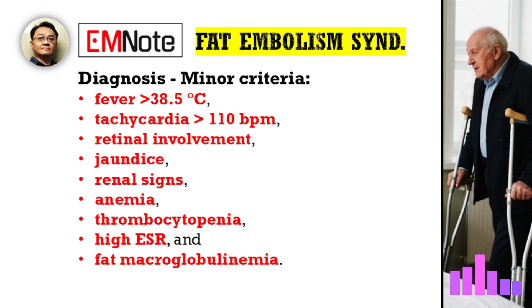The minor criteria add supporting evidence. They include fever usually greater than 38.5°C, tachycardia with a heart rate over 110 beats per minute, retinal changes where you might see fat globules or hemorrhages on eye exam, jaundice suggesting liver involvement, renal signs like decreased urine output or protein in the urine, and lab findings such as anemia — a drop in hemoglobin — thrombocytopenia, a high erythrocyte sedimentation rate indicating inflammation, and sometimes fat macroglobulinemia — finding fat in the blood.